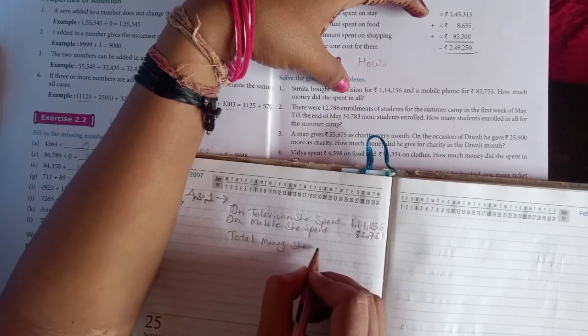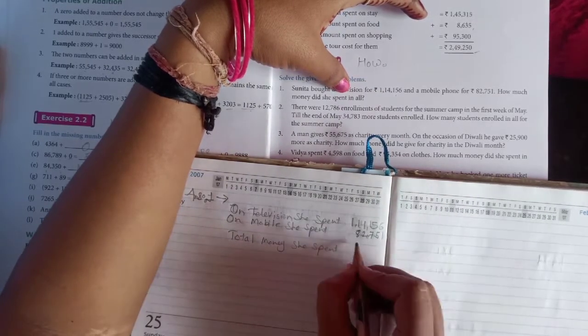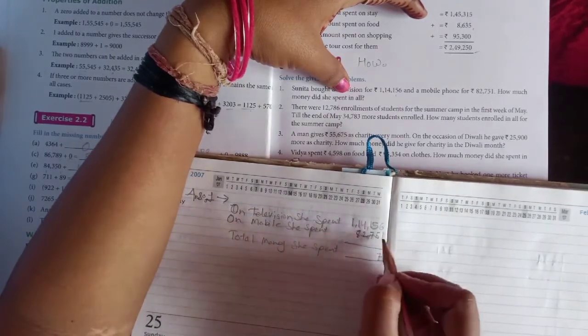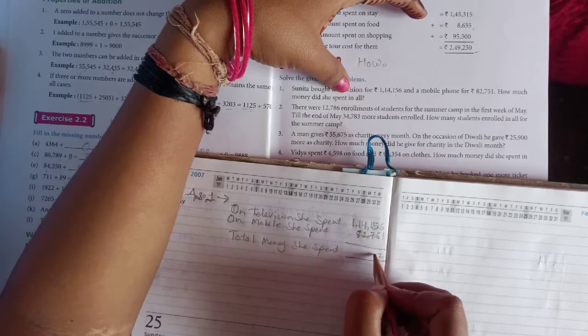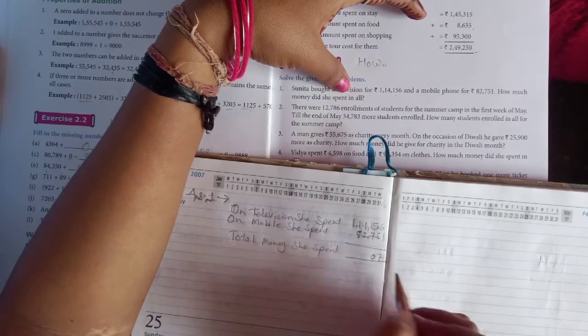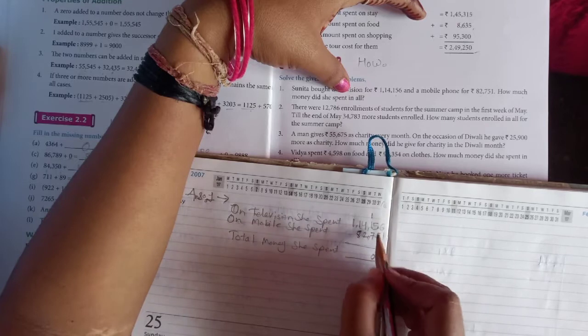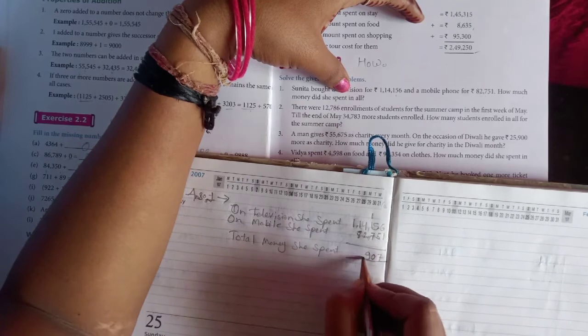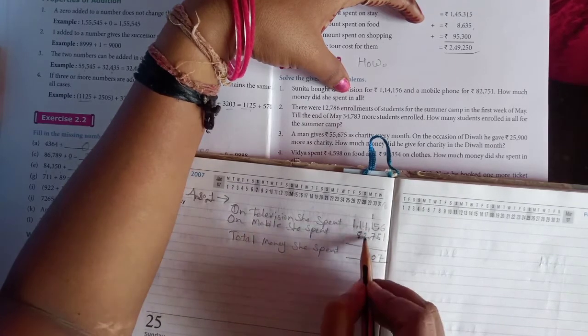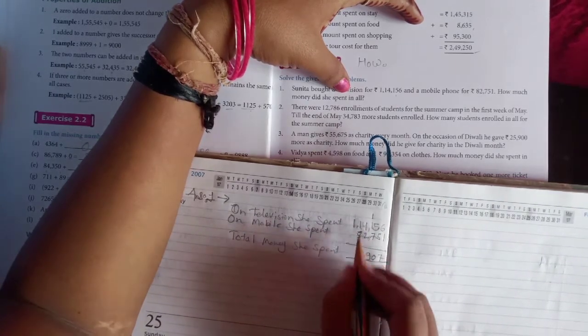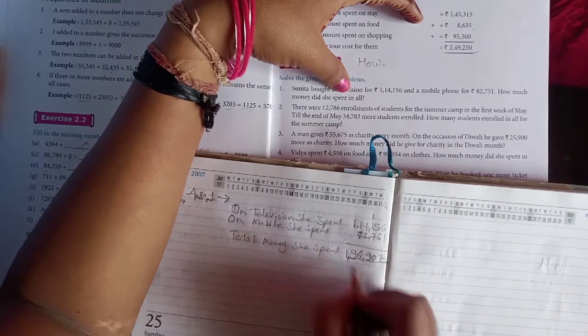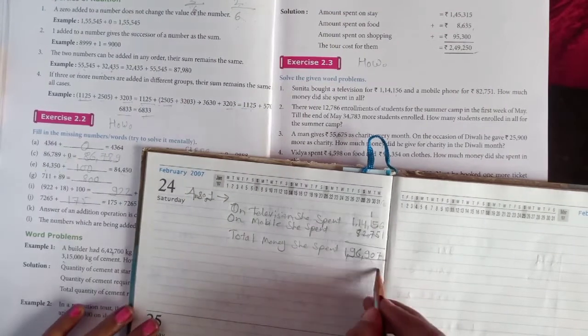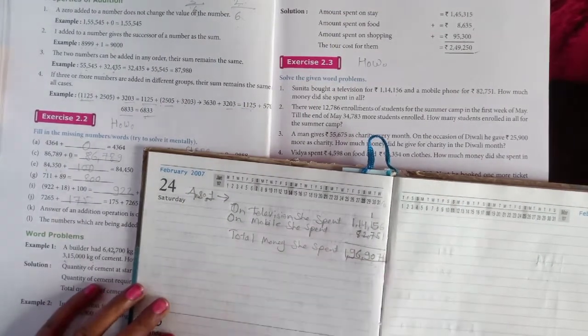6 plus 1 is 7. 5 plus 5 is 10, so 0 is written here. 1 is carry forwarded to the hundreds position. 7 plus 1 is 8, plus 9 is 17, so 9 is here. 4 plus 2 is 6. 8 plus 1 is 9. And 1 lakh is as it is. So total spent amount is 1,96,907 rupees. Understood?